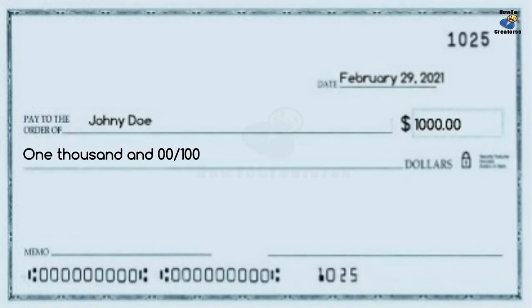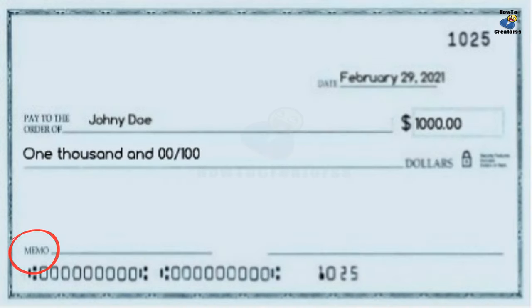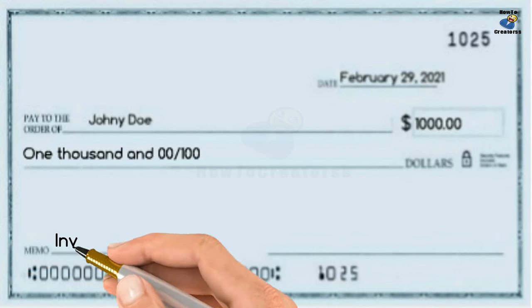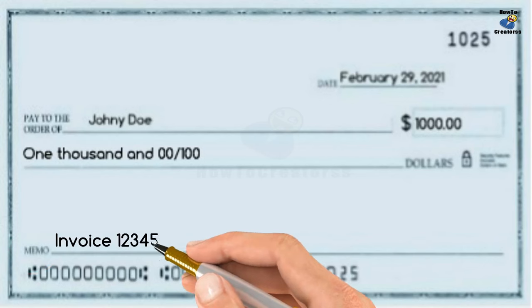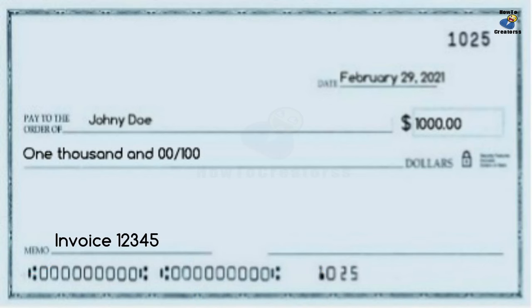Amount in words: write "one thousand and 00/100" on the next field, as far to the left on that line as possible. Use sentence case. For a memo, note what the check payment is for — for example, the invoice number. Take note that this memo field is optional.